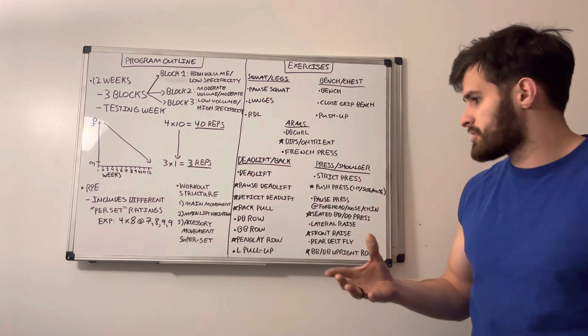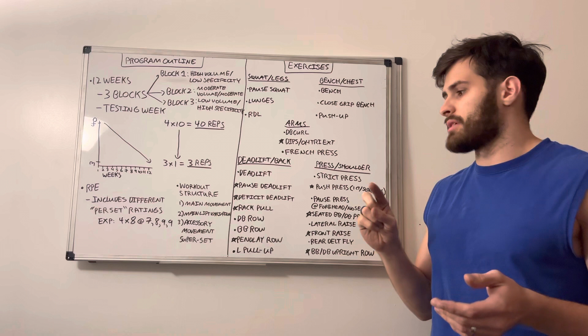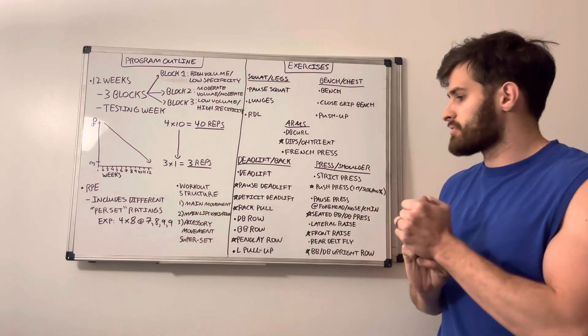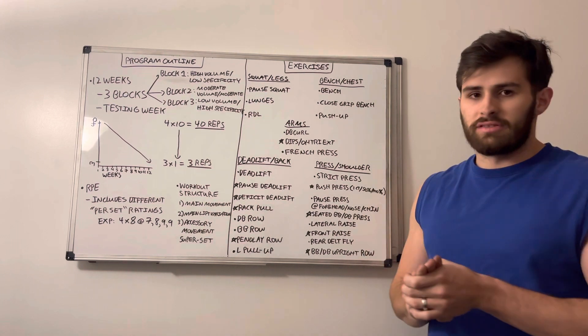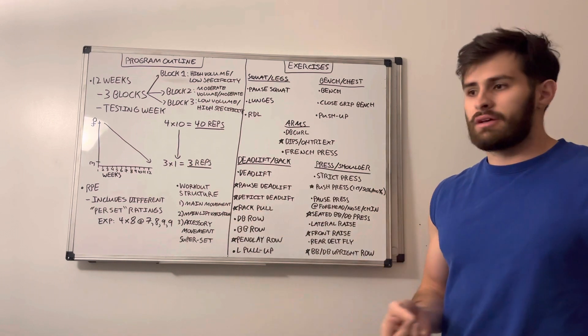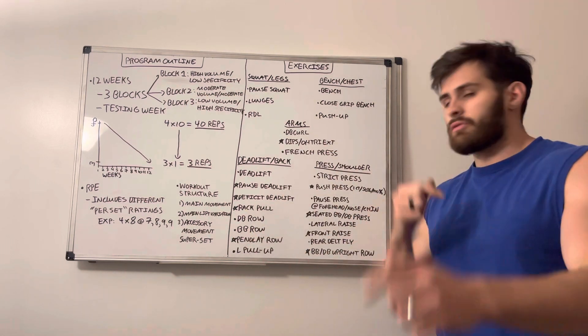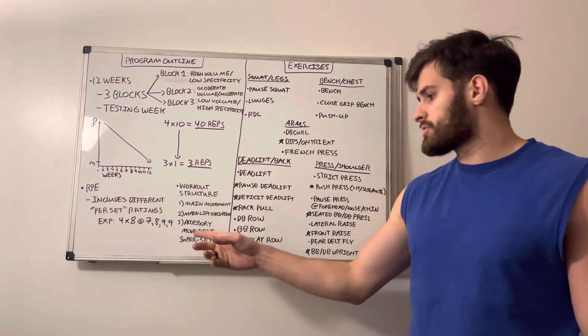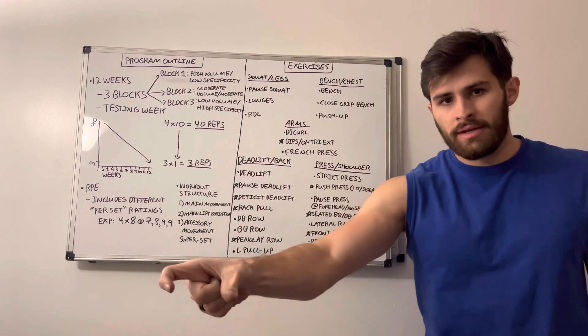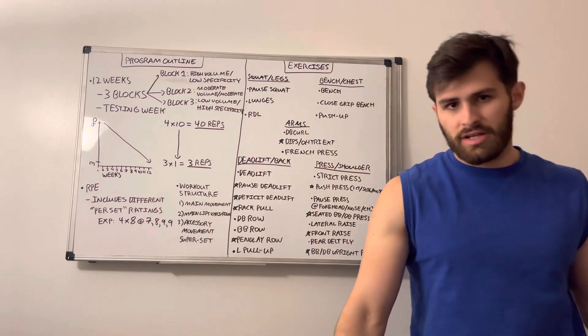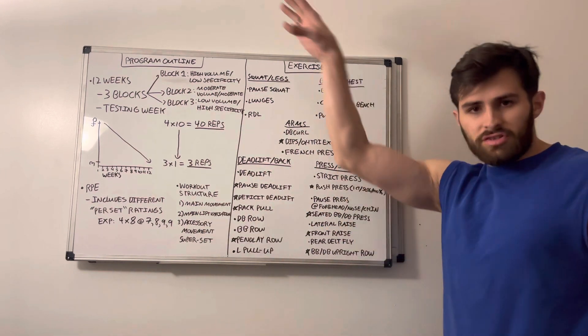As far as how the actual workouts will be structured, there will be a main movement of some kind. So a strict press, like no variations on the press, a bench press, a pause squat. We won't be doing any regular squats for this program. After that, we'll have some kind of main lift variation. So it could be a pause variation, which you've done this last program, anything else that might add some variability to the main lifts. Also, we have accessory movements, except now we're going to bring back the superset. So we're going to introduce one movement, and then we'll alternate sets of one exercise with first set of the next exercise, and so on for however many sets we're doing for that day.